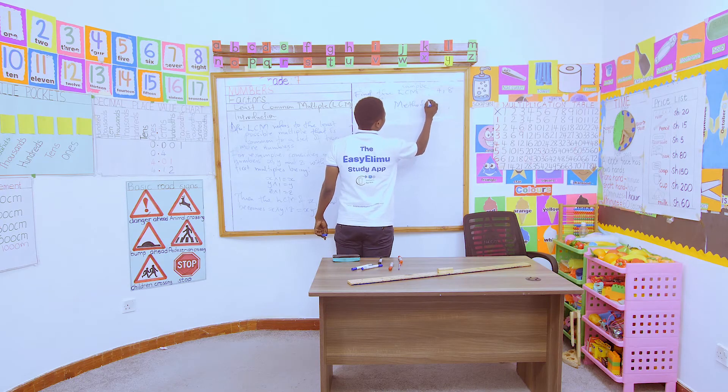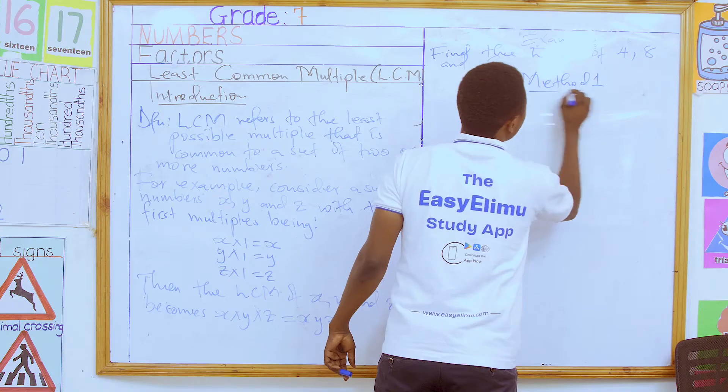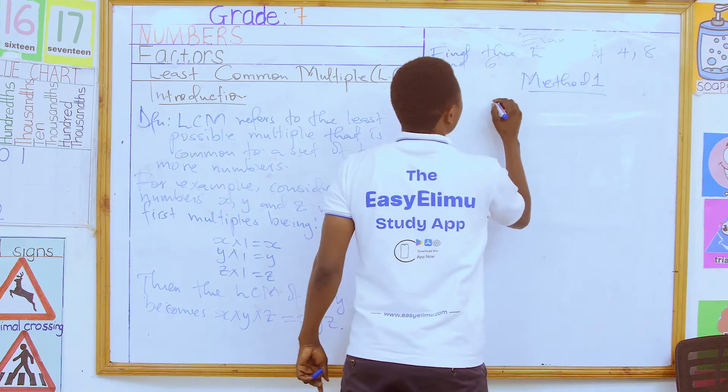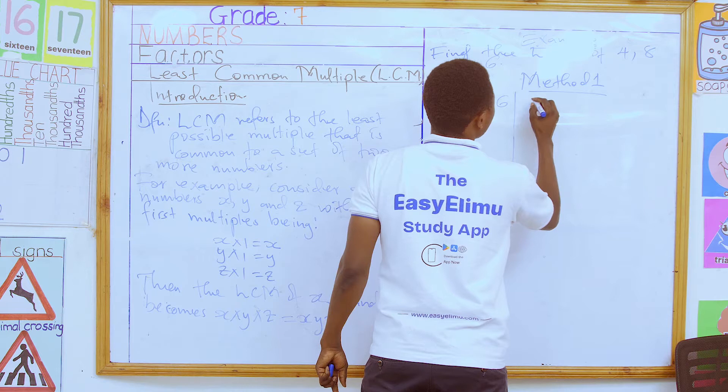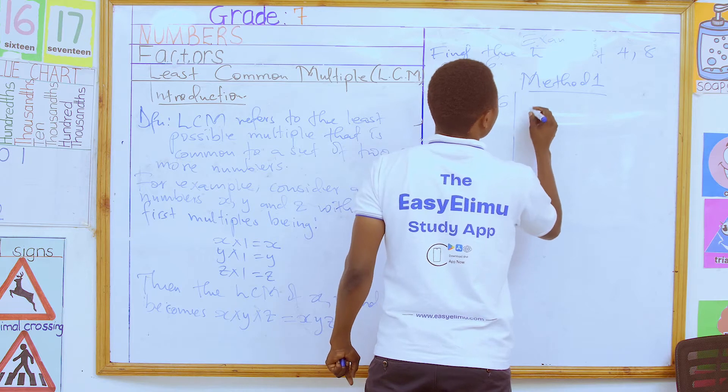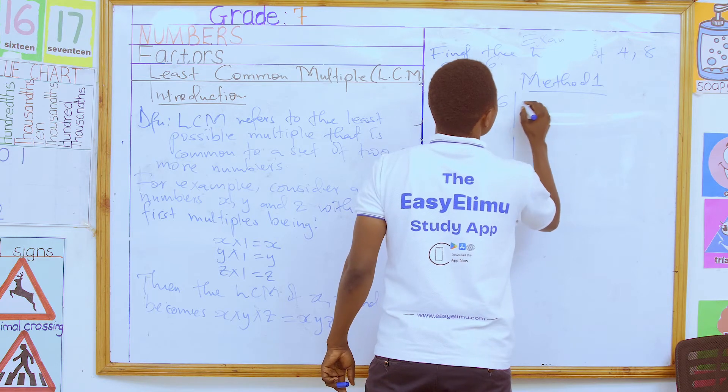In Method 1, we write the numbers horizontally then partition using vertical lines.